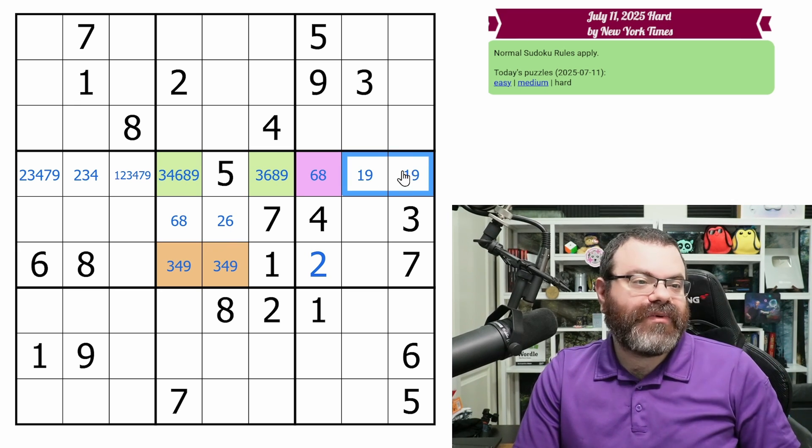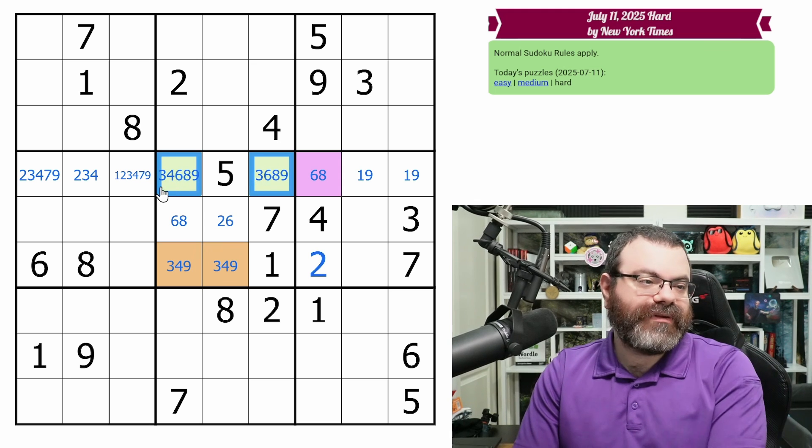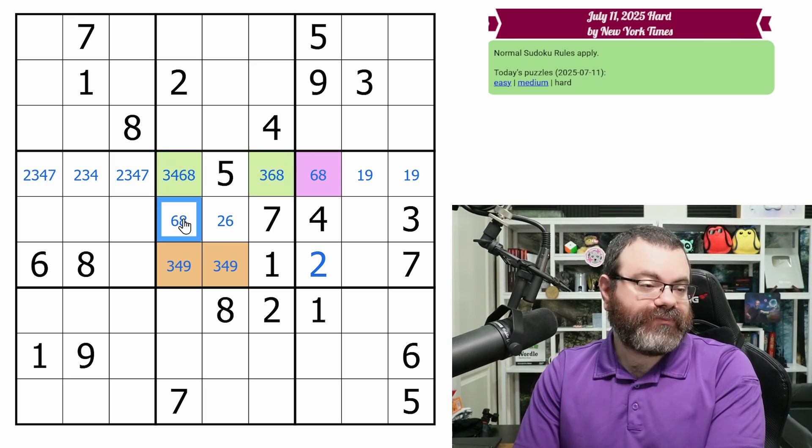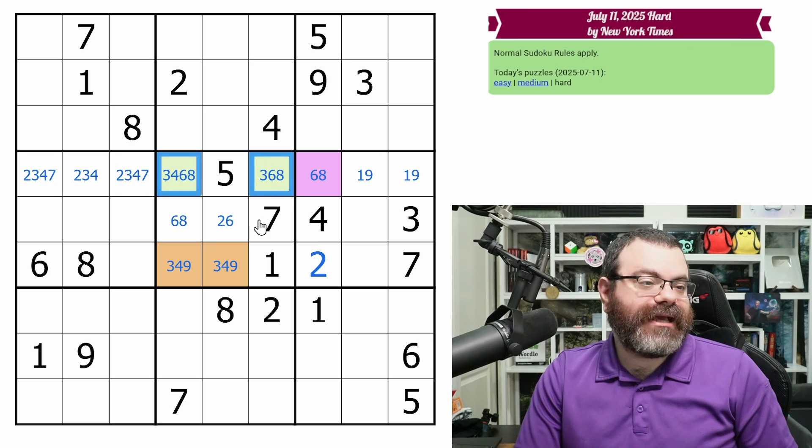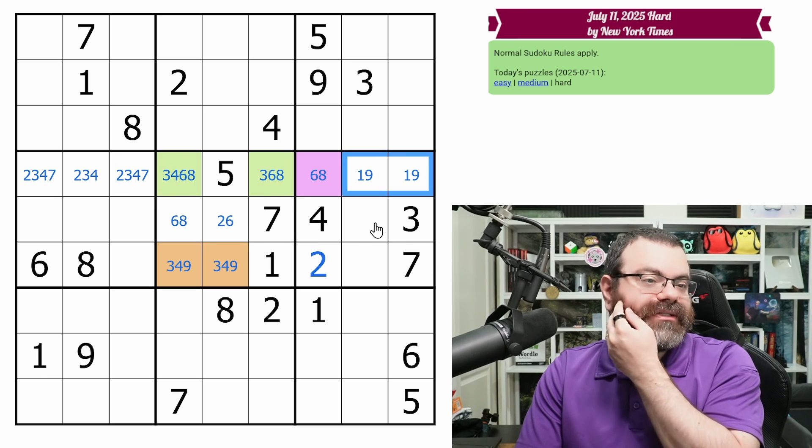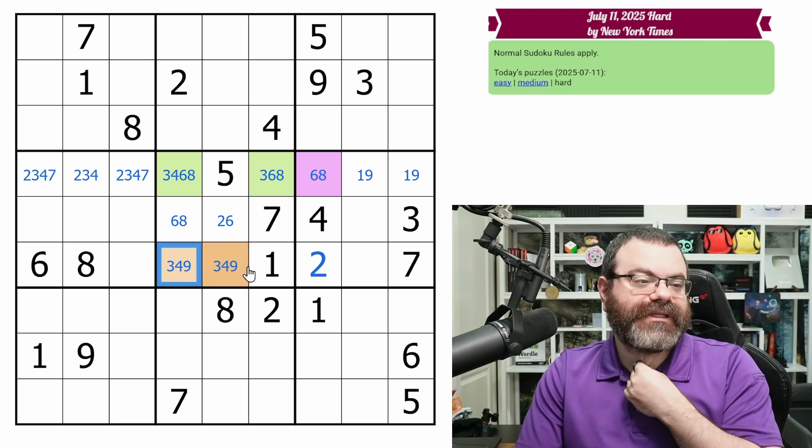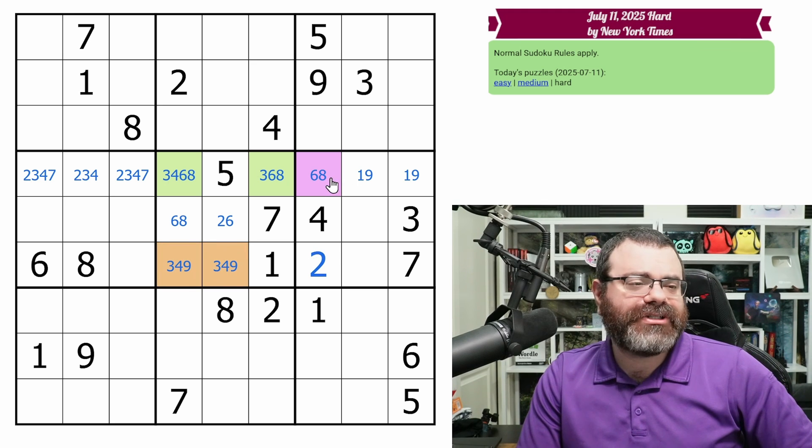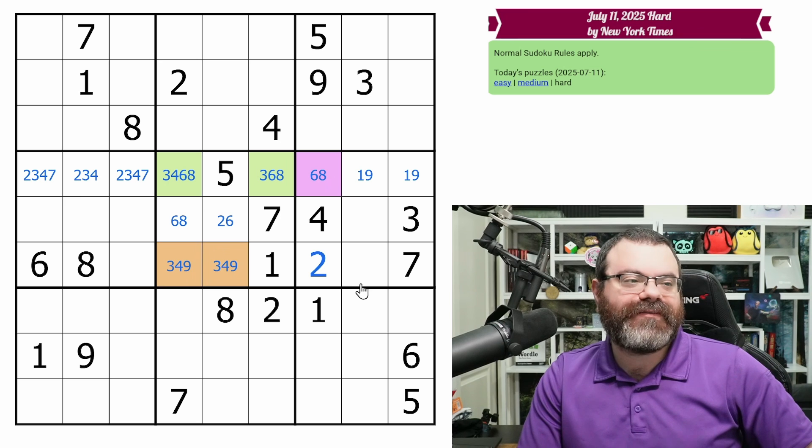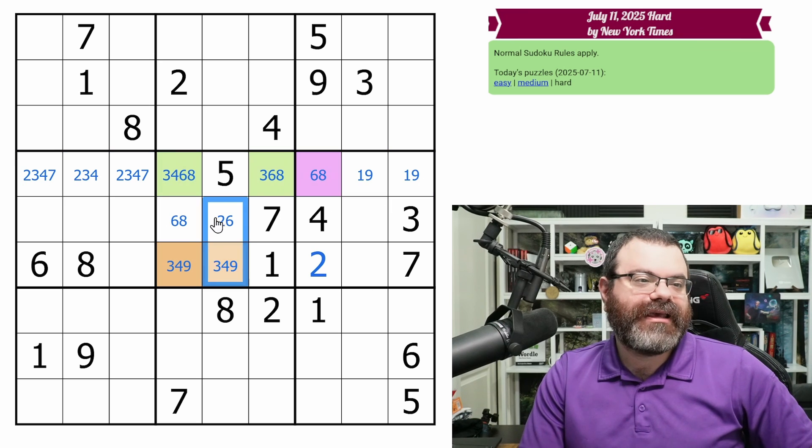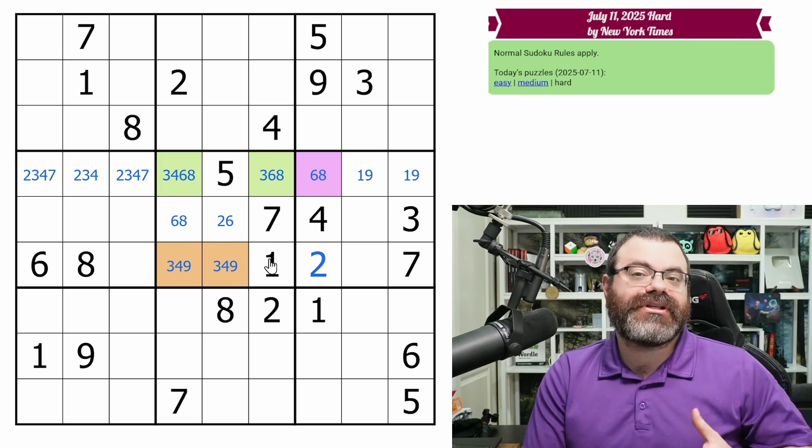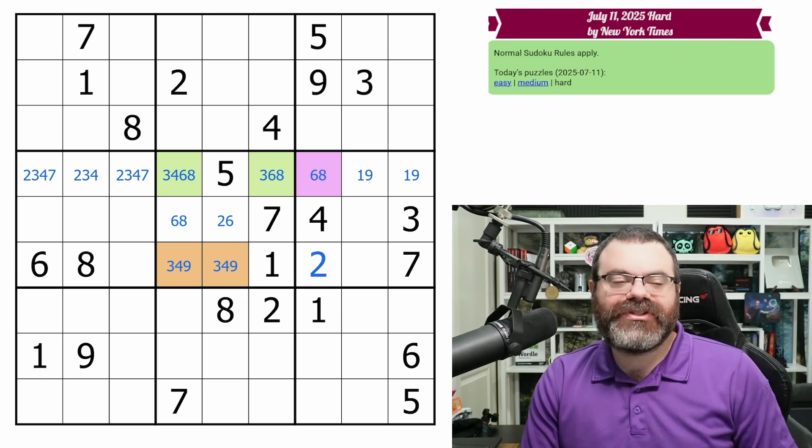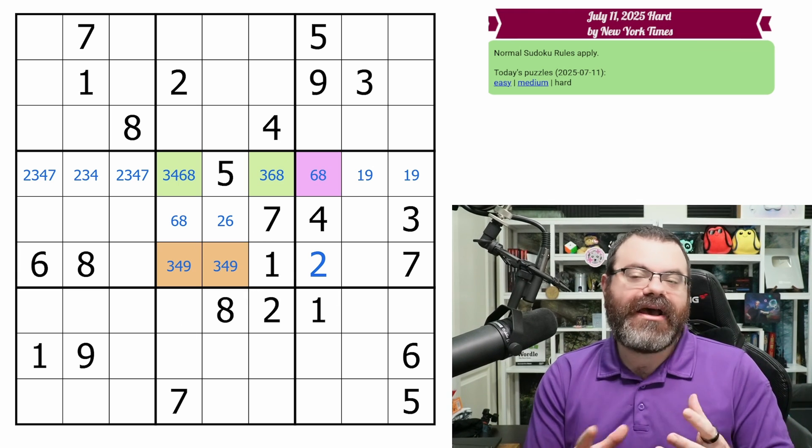And from here we get this one, nine pair, which allows us to remove one and nine from all of these cells. And yeah, that makes for a really nice start to the puzzle. You get seeded with some good stuff that you wouldn't have otherwise had. And from here, it may actually just be singles. Like, I don't think you have to find anything else. You find the pseudococ and you find the one, nine pair and the rest should solve with hidden and naked singles. So, I think that's a really neat demonstration of that technique and how you can think about it.